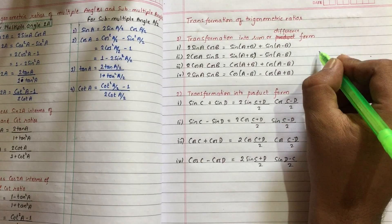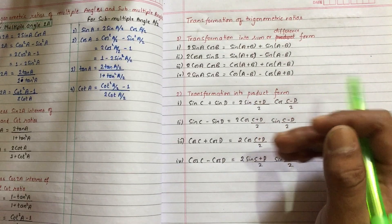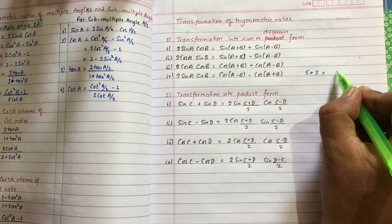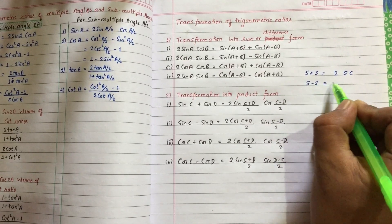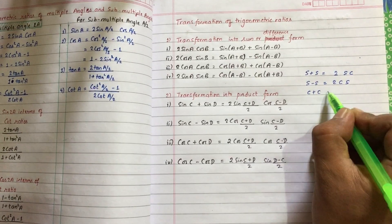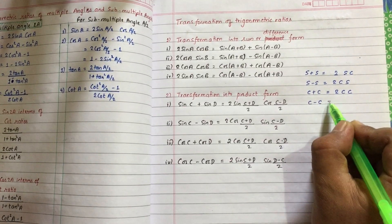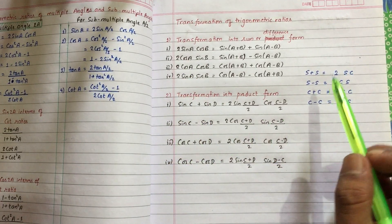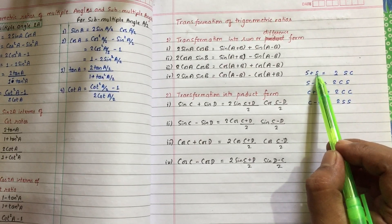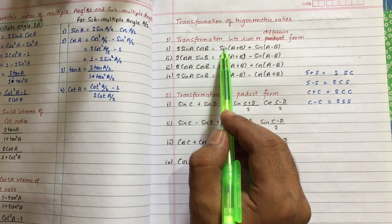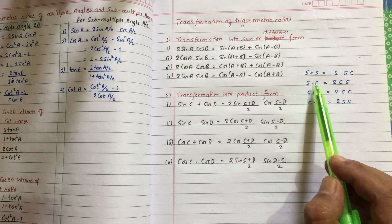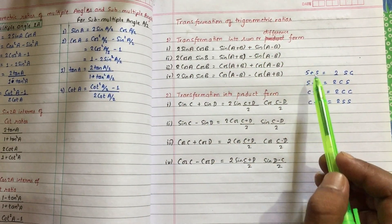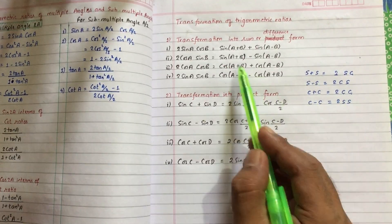I want to explain this formula using some tricks. The pattern is: S plus S gives 2SC; S minus S gives 2CS; C plus C gives 2CC; C minus C gives 2SS. So sin(a+b) plus sin(a−b) gives 2 sin a cos b. Sin minus sin gives 2 cos sin. Cos plus cos gives 2 cos cos.